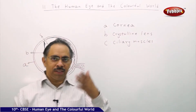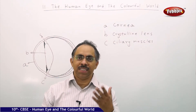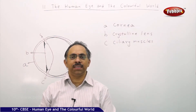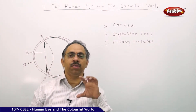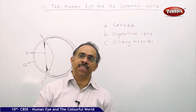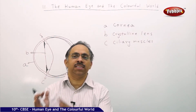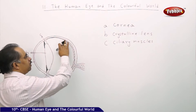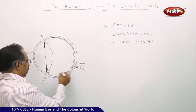Earlier we discussed that wherever you keep the object within a certain range, you will be able to see the image clearly. In a normal glass lens, the focal length does not change because it is a converging lens. If the object position is changed, you need to change the image distance. But here, the image is formed on a particular layer inside the eye, which we call the retina.